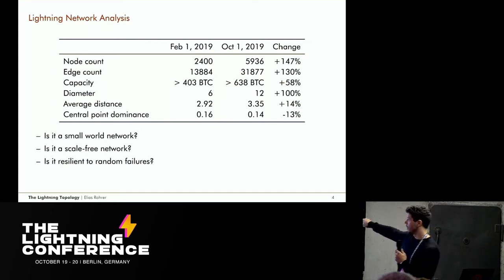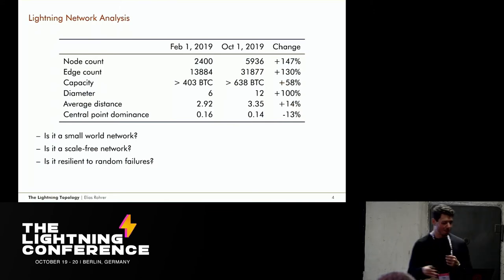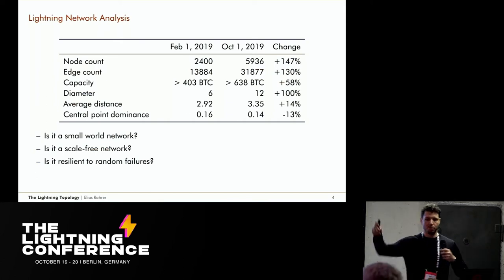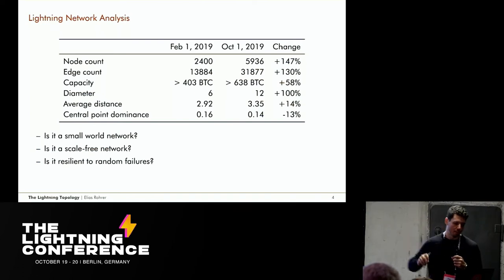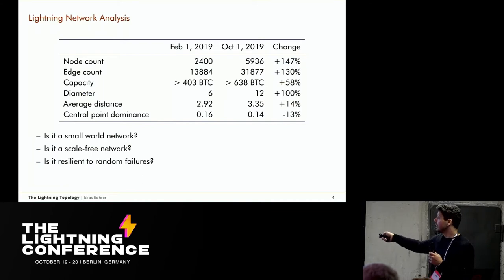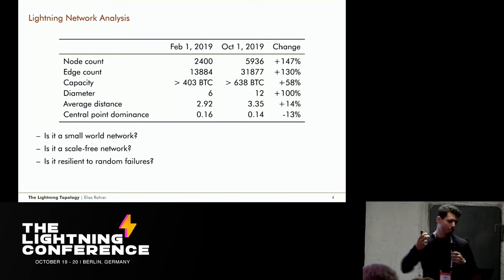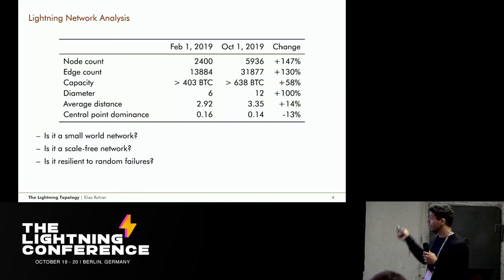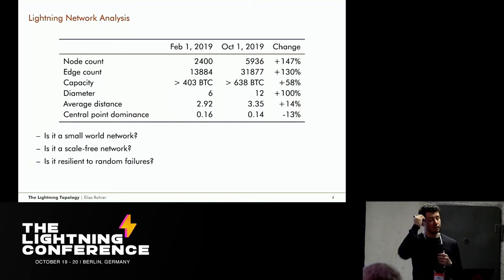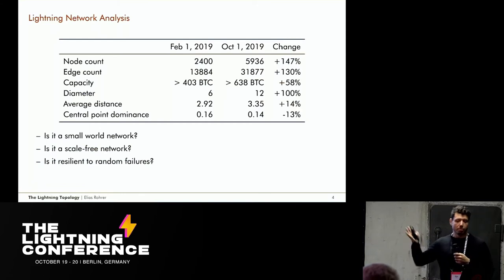From a graph-theoretic point of view, the network now has a diameter of 12, meaning in the worst case we route payments over 12 hops to get from one edge to the other. However, the average distance increased by only roughly 14%, which is not a bad change. Even the central point dominance decreased by 13%, meaning the Lightning Network is now slightly more decentralized than eight months ago.